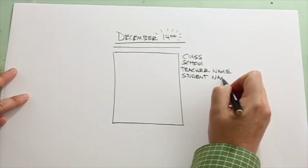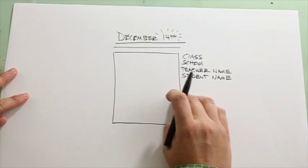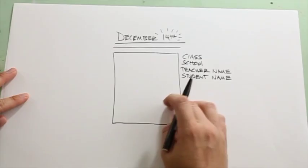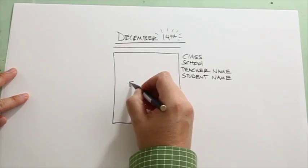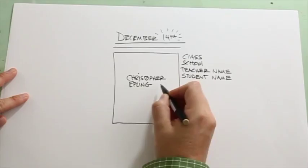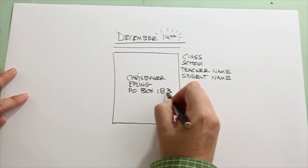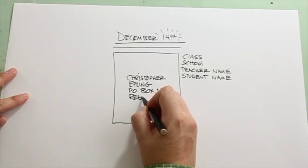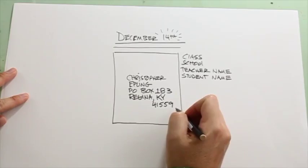So, when you mail this to me, put all the students' work, whether it is one student, or 20, in a packet. And when you send this to me, my address is, and be sure to write this down, so it's, put Epling, you can just put Christopher Epling, we'll simplify. Christopher Epling, PO Box 183, okay, that's a 183. Regina, Regina, R-E-G-I-N-A, Kentucky, K-Y-4-1-5-5-9. Okay? This is the address you'll use to submit your packet, all your students' works into us.